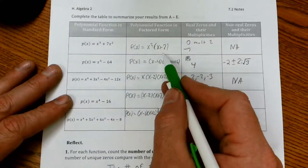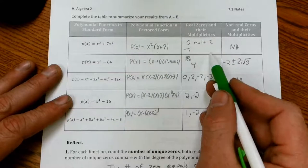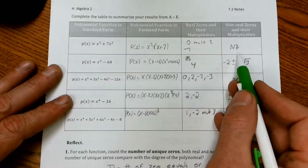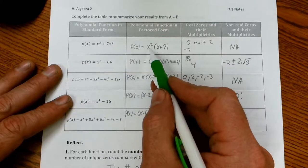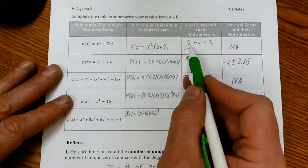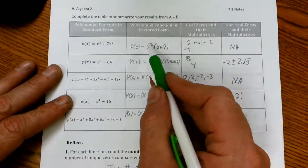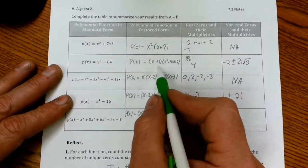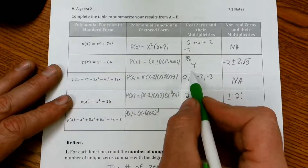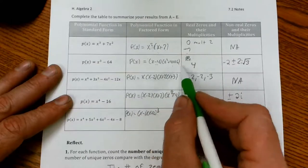These are our factored forms. So that's x squared and x plus seven, and we've broken it down to real zeros and non-real zeros. This had zero as a factor with multiplicity two and negative seven. On this one we had a real zero four and then we used quadratic formula to get our negative two plus or minus two i.